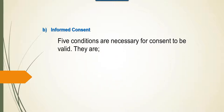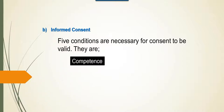Five conditions are necessary for consent to be valid. They are: Competence, Information, Voluntary Decision, Comprehension and Authorization. Competence is the legal capacity of a person to make a decision. Adults are presumed to be competent unless otherwise declared by a court of law. Competence is also defined as the capacity to make a responsible choice. A mentally ill adult is legally capable, but he is not in a position to make an autonomous decision. Hence, he lacks competence.